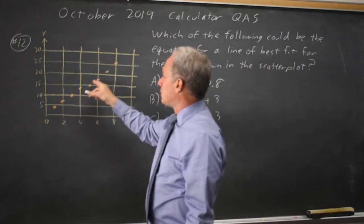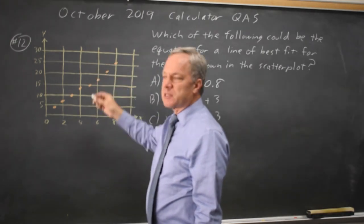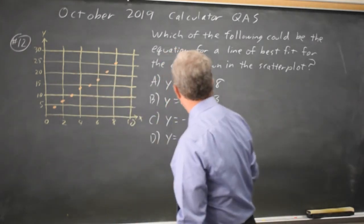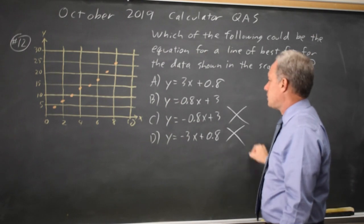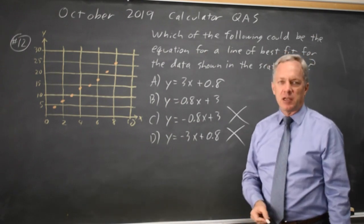Since the points go up in value as you move to the right, that's a positive slope, and we can rule out choices C and D. The question is, is it A or B?